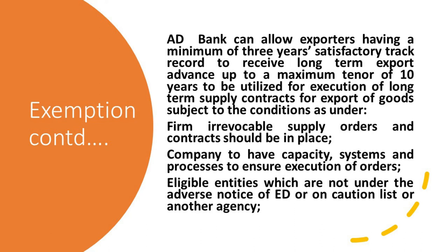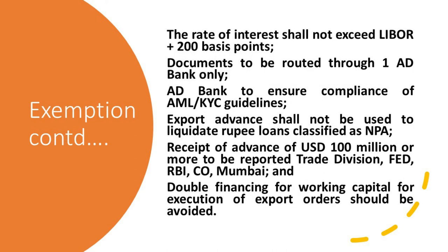Exemption continued: AD banks can allow exporters having a minimum of three years satisfactory track record to receive long-term export advance up to a maximum tenor of ten years, to be utilized for execution of long-term supply contracts for export of products, subject to conditions. The bank should check that companies have the capacity, systems, and processes to ensure execution of orders. Eligible entities must not be under adverse notice of the ED, on the caution list, or flagged by any other agency like CBI. The rate of interest shall not exceed LIBOR plus 200 basis points. Documents should be routed through one AD bank only, and the AD bank must ensure compliance with AML and KYC guidelines.